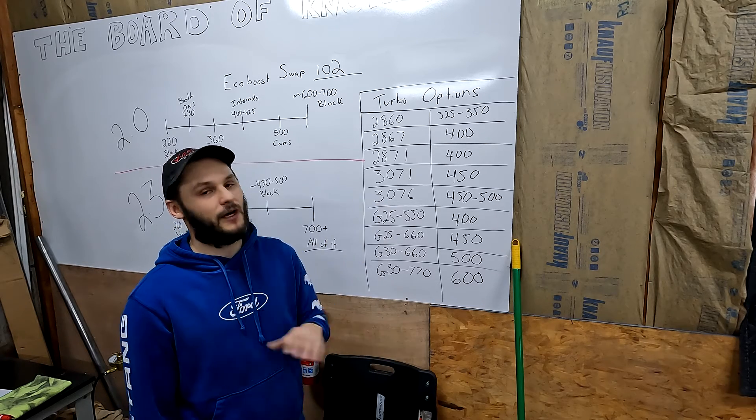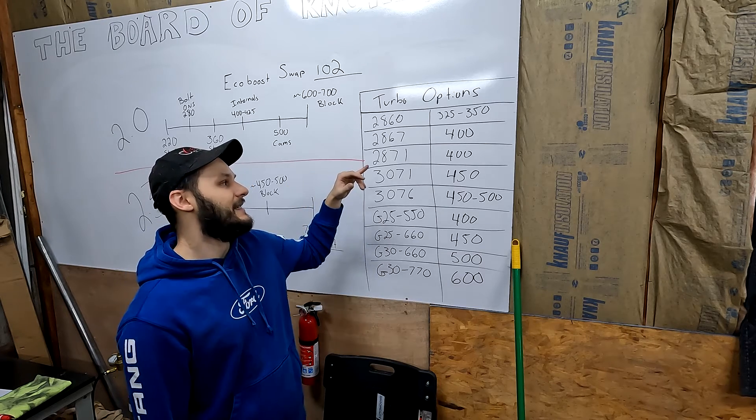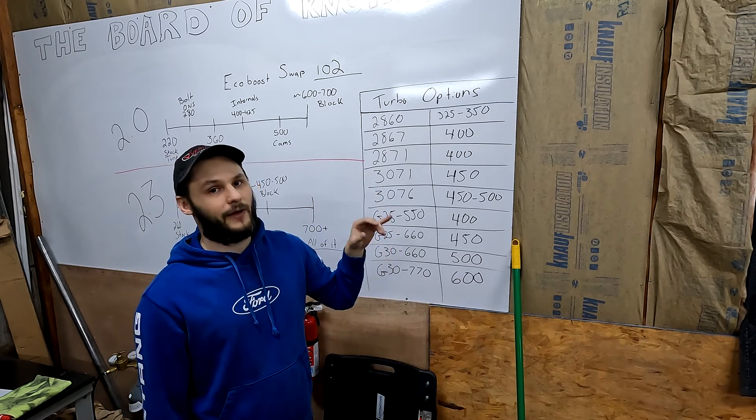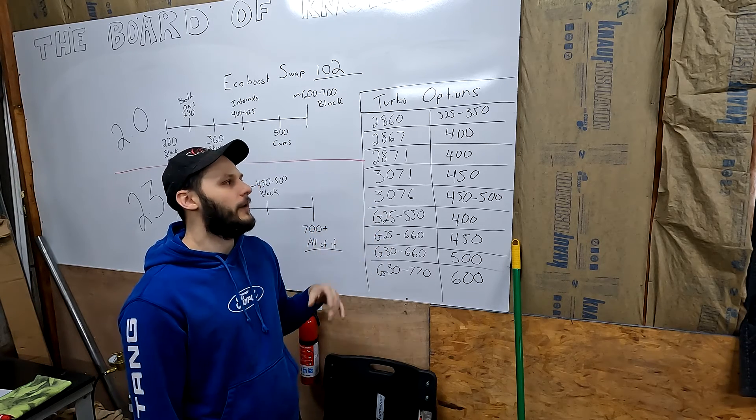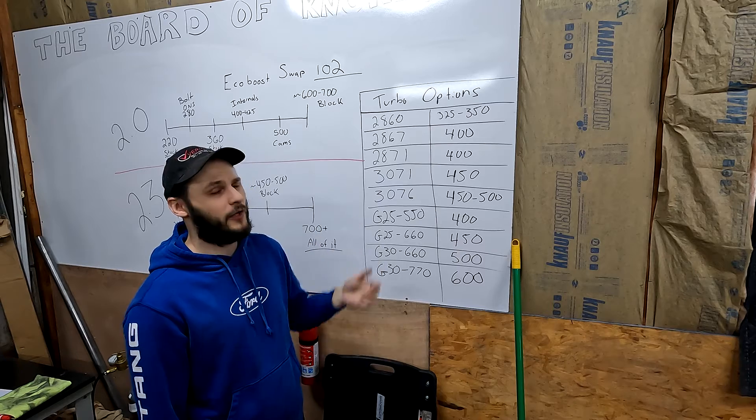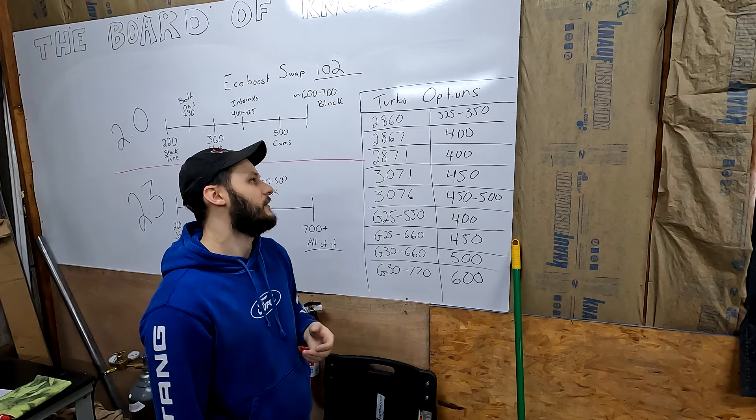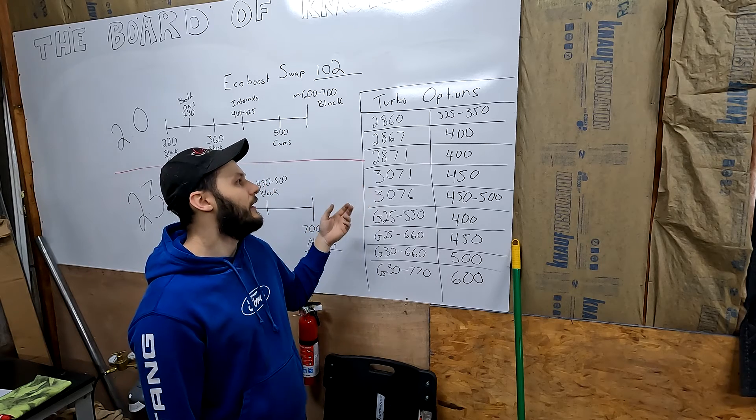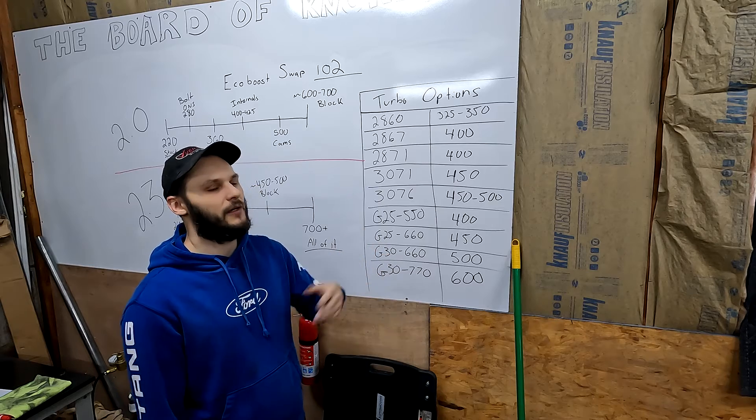You can make your 350 and not have to upgrade anything else. Going up from there, we have the 2867. I ran one of these on one of my old Focus STs. I made 404 horsepower and like 401 wheel torque. They're really quick to spool, slightly slower than the 2860, but it's not a noticeable difference. The 2871 is about the same spooling characteristics, maybe a little bit slower, but you can also get a little bit more power on the top end.